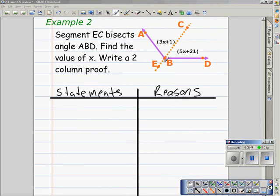Since segment EC bisects angle ABD, we know that angle ABC and angle CBD are going to be equal. And we are given an expression that those two angles are equal to.